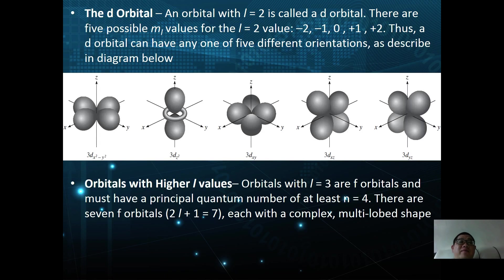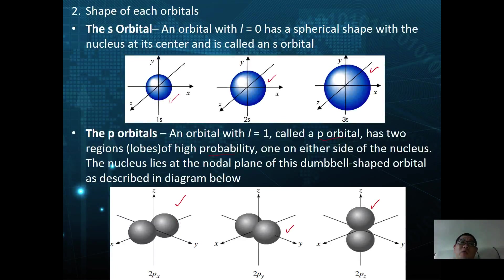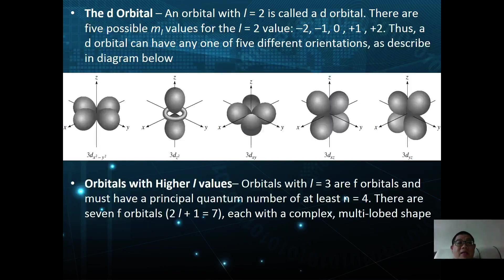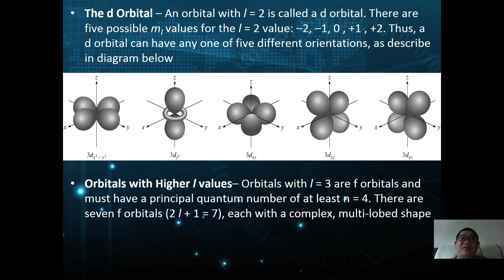For d orbitals, there are five, and this is how the five orbitals look. Students generally don't have to know how to draw d orbitals, but you should at least know how to draw s and p orbital shapes. For f orbitals, which have higher energy levels, they have a multi-lobe shape — I won't introduce those here, but you can find them online if you want to know what f orbital shapes look like.